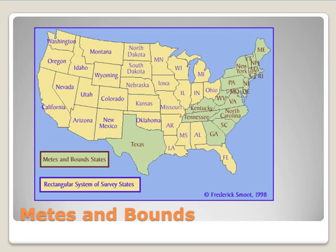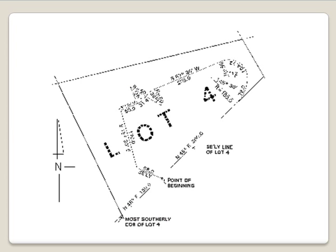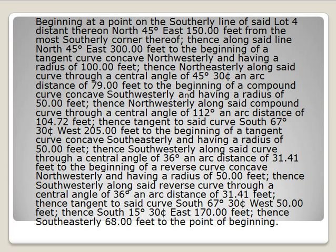You're going to see metes and bounds primarily in the original 13 colonies and a little bit in Texas, though Texas is also overrun by Spanish land grants. These descriptions give very irregular shaped lots. Current lot descriptions using metes and bounds are still used today — they're very detailed and very specific.